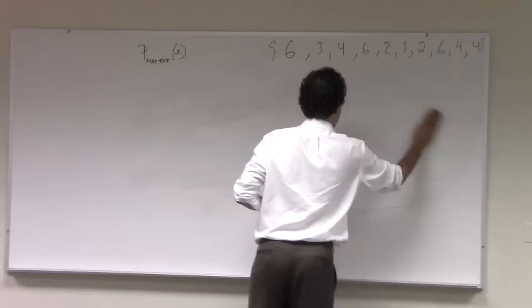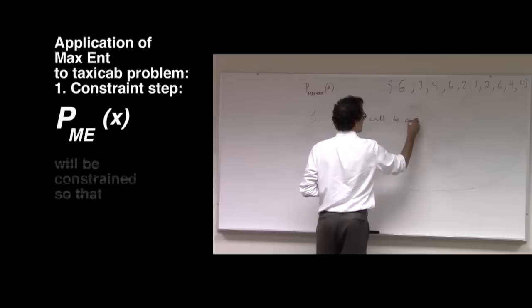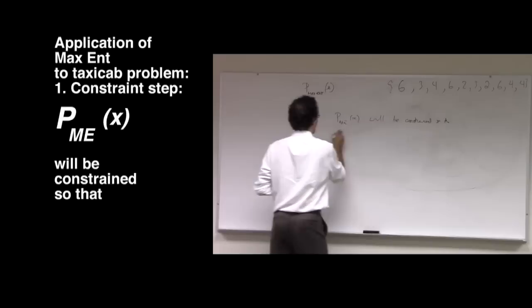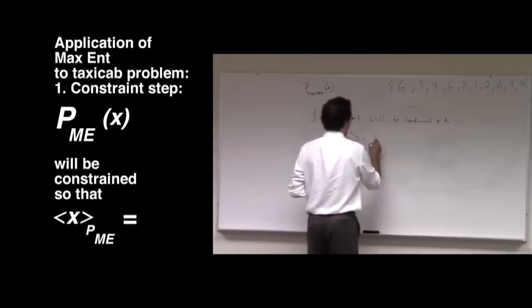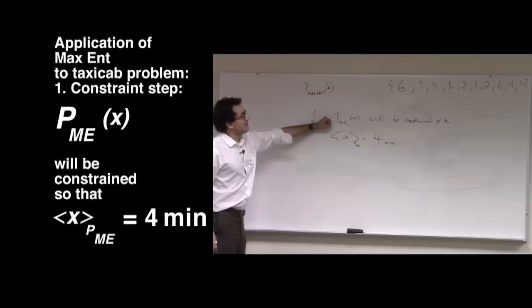What we're going to do in this particular application of the maximum entropy principle is: P_ME of X will be constrained so that the average value of X, the average waiting time under the distribution P_ME, is equal to that in the data. And in fact, if you count here and measure the average waiting time in the data, you discover, and I'm quite happy about this, the average waiting time in this data set is 4 minutes.